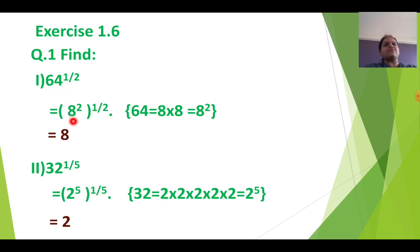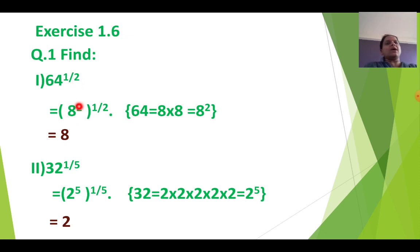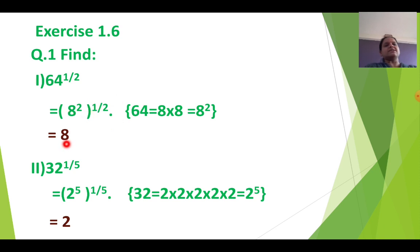So 8 square in bracket raised to 1 by 2 — that 2 and 2 will get cancelled. So I am getting 8 raised to 1. Final answer is 8. I have written the split: 64 means 8 into 8, which is 8 square.